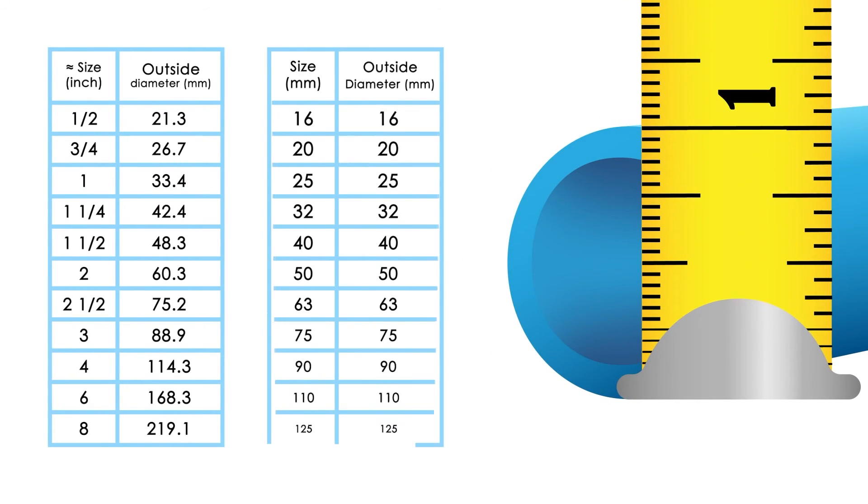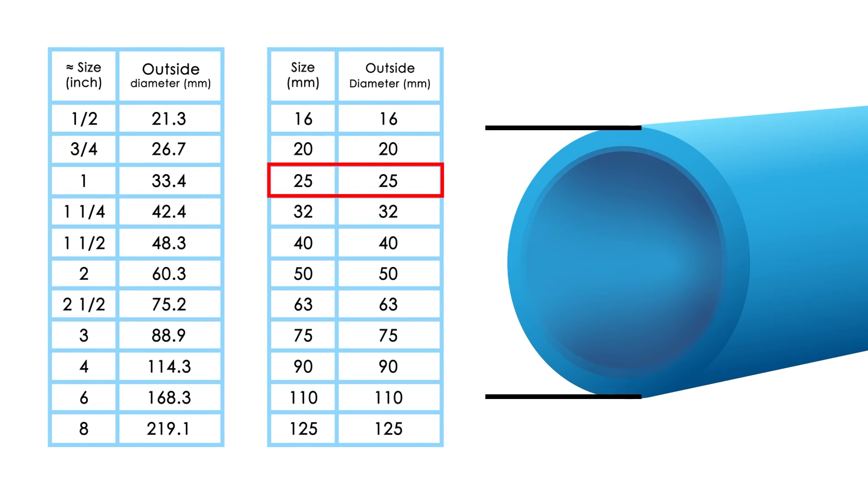On the other hand, metric sizes are taken from the outside diameter, and so a 25mm pipe will actually measure 25mm, even when the thickness of the pipes vary.